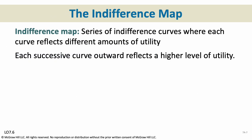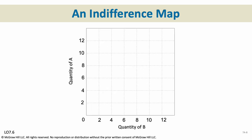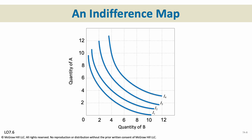An indifference map is a series of indifference curves where each curve reflects different amounts of utility, and each curve as it moves outward reflects a higher level. Curves further from the origin show higher amounts of utility. Remember, everybody gets different utility from different products, which is why we have this map.